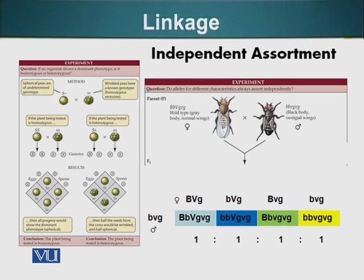The normal wings would be capital V, small vg. The abbreviation for normal wings is capital V, small vg. And for the vestigial wings, which are non-functional, it is small v with a g.